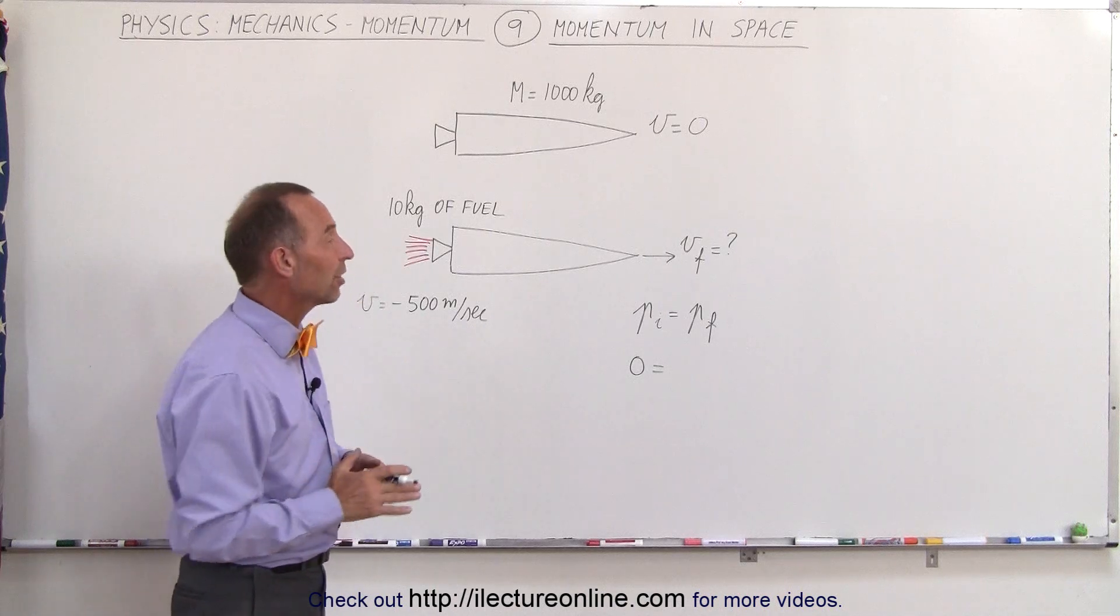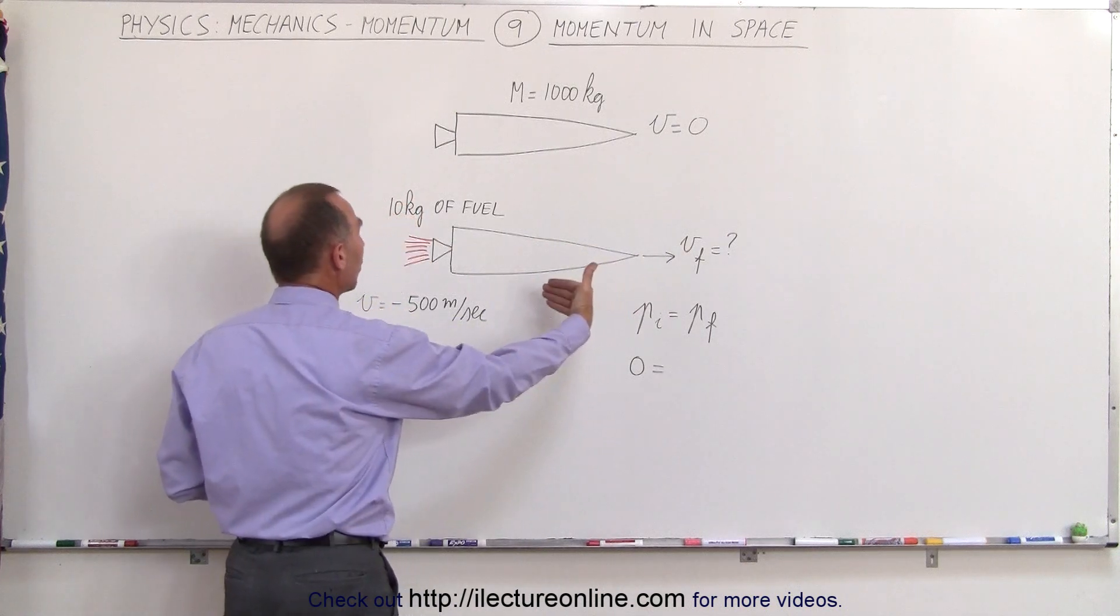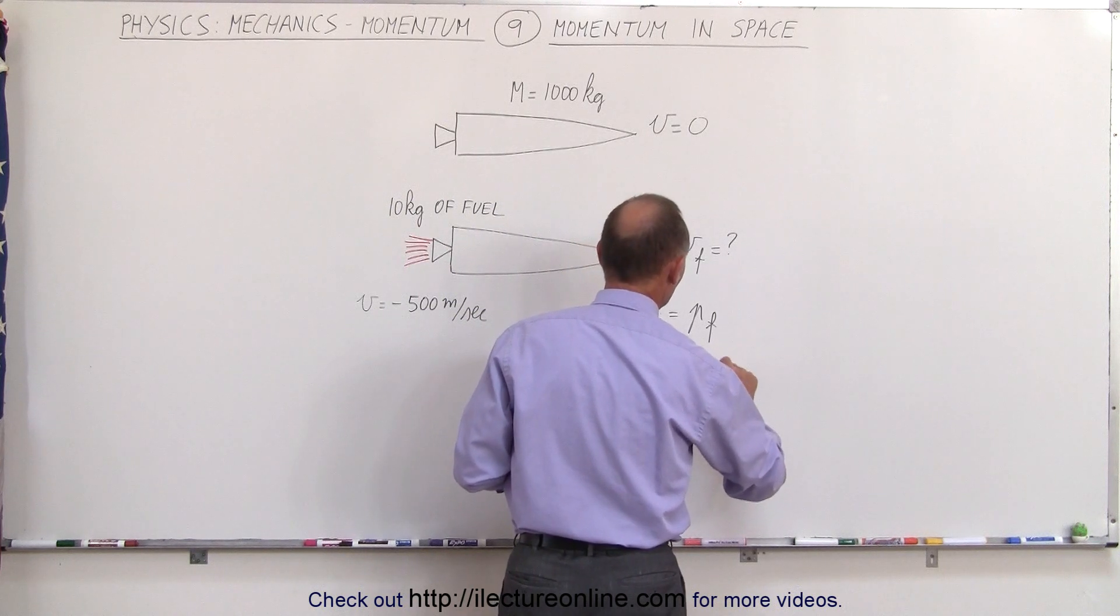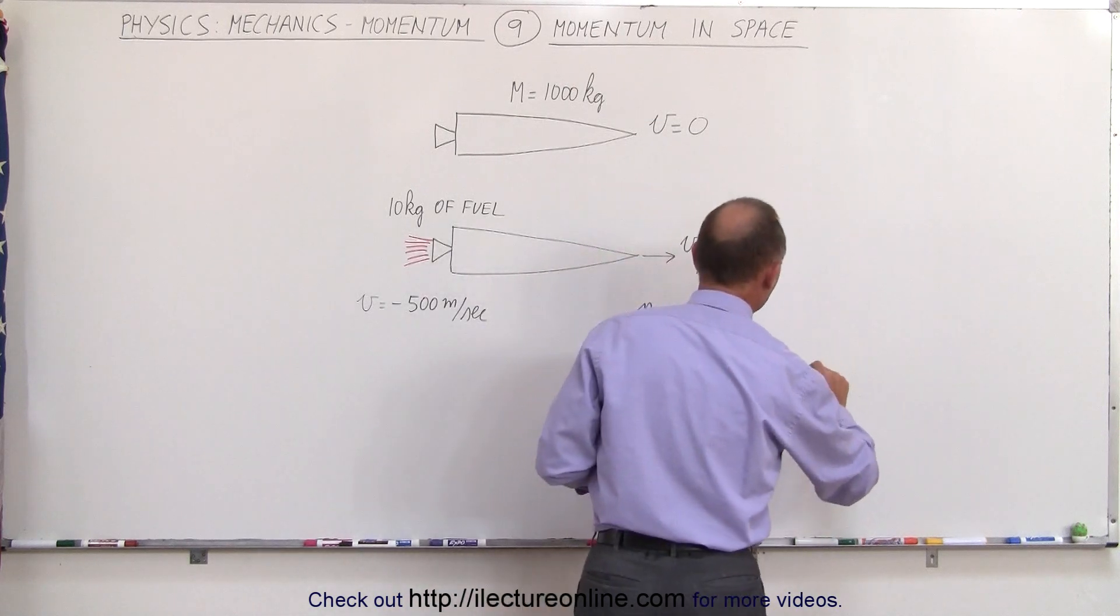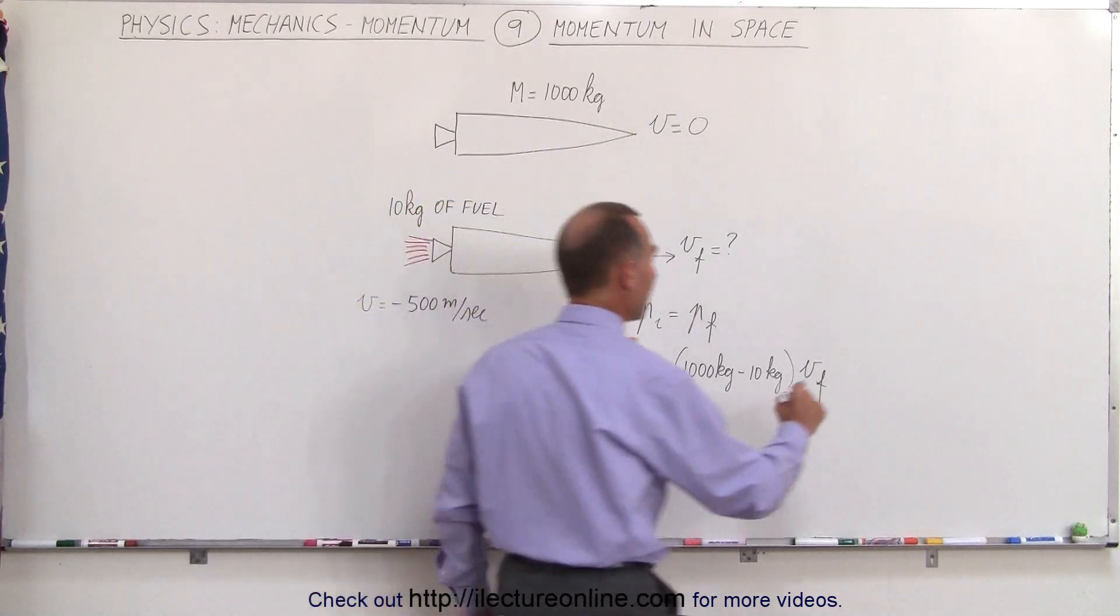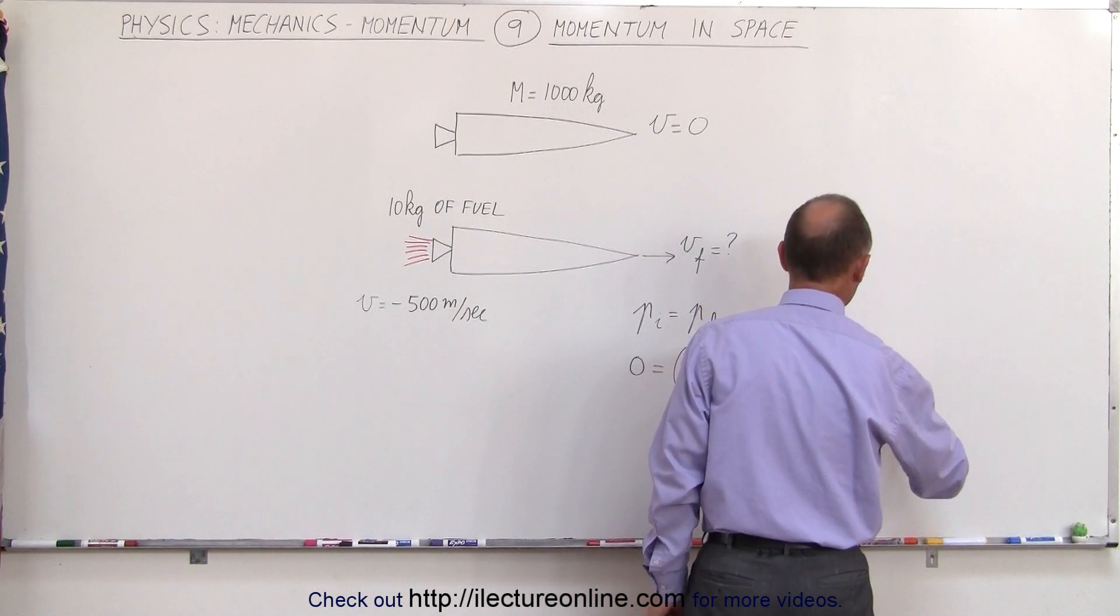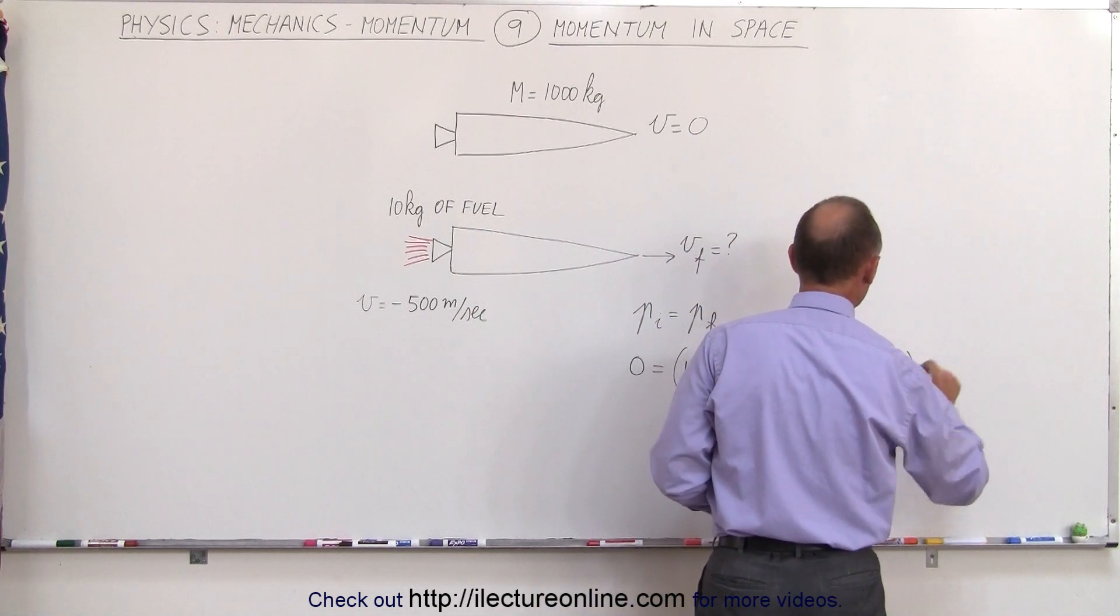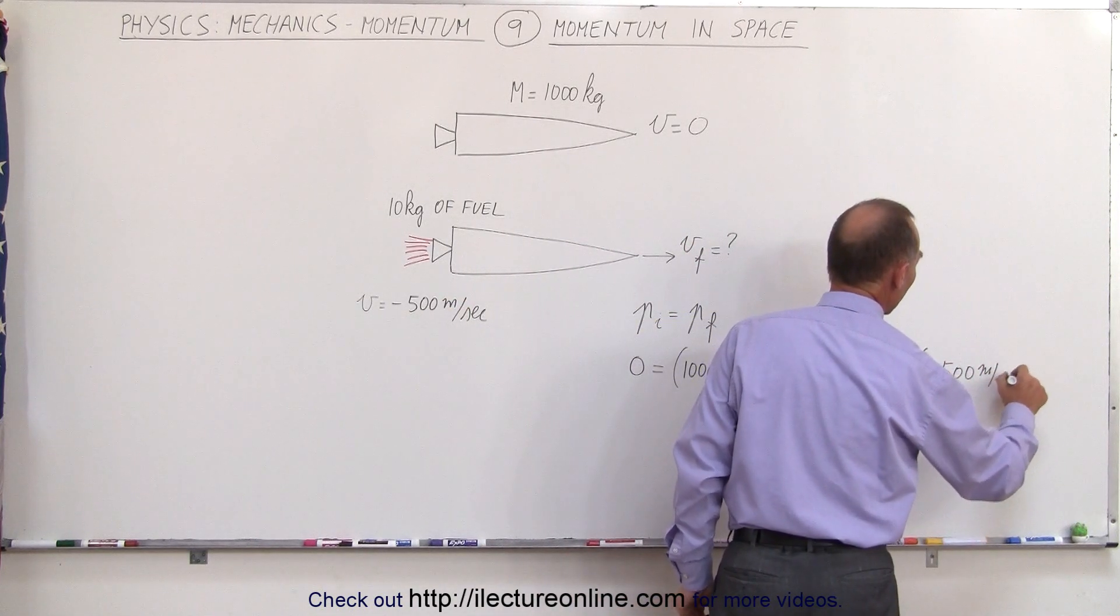Final momentum will consist of two objects: the spaceship minus the 10 kilograms of fuel moving to the right and the fuel moving to the left. So in this case it would be the mass of the spaceship which is 1000 kilograms minus the 10 kilograms of fuel moving to the right at v final and that's what we're trying to find. Moving to the left would be plus the mass of the fuel, 10 kilograms times the velocity of that fuel which in this case is minus 500 meters per second.